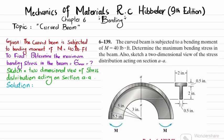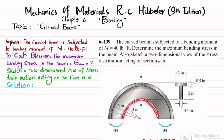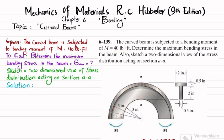Welcome back. In this video we are going to solve problem 6-139 taken from chapter 6 on bending, from Mechanics of Materials by R.C. Hibbeler, 9th edition. The curved beam is subjected to a bending moment of 40 pounds-feet. We need to determine the maximum bending stress in the beam.